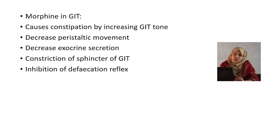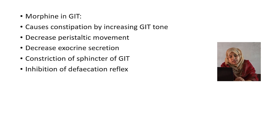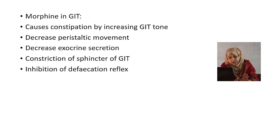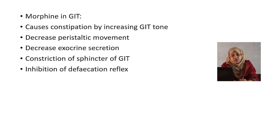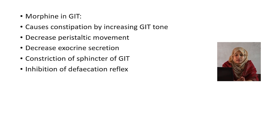How does morphine cause constipation in the GI tract? This is an important question for your viva. Morphine causes constipation by: 1) increasing GI tract tone — the smooth muscles of the GI tract; 2) decreasing peristaltic movement of the gut; 3) decreasing exocrine secretion — if secretion is decreased and peristalsis is diminished, stool cannot pass; 4) constriction of the sphincters of the GI tract; and 5) inhibition of the defecation reflex. These 5 mechanisms cause constipation in morphine use.